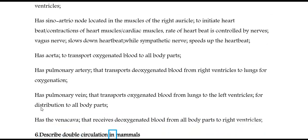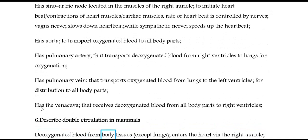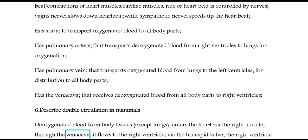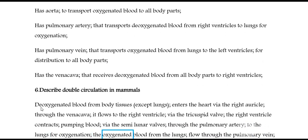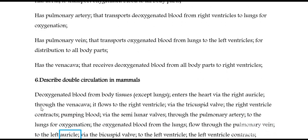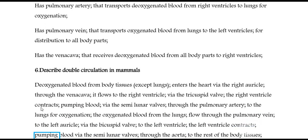Question 6: Describe double circulation in mammals. Deoxygenated blood from body tissues, except lungs, enters the heart via the right auricle through the vena cava. It flows to the right ventricle via the tricuspid valve. The right ventricle contracts, pumping blood via the semi-lunar valves through the pulmonary artery to the lungs for oxygenation. The oxygenated blood from the lungs flows through the pulmonary vein to the left auricle, via the bicuspid valve to the left ventricle. The left ventricle contracts, pumping blood via the semi-lunar valves through the aorta to the rest of the body tissues.